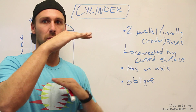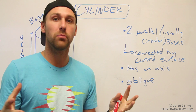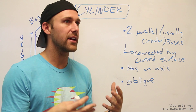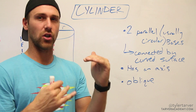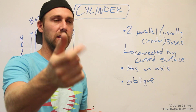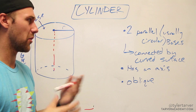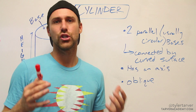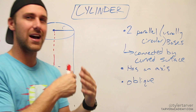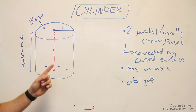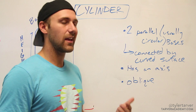Most of the time when we think about a cylinder, we think of a perfect circle connected by a tube portion. This is technically called a right circular cylinder, because it doesn't have to be a circle — another common shape is an ellipse, or an oval. Any curved shape works, but 99% of the time you'll deal with the kind that's a perfect circle.